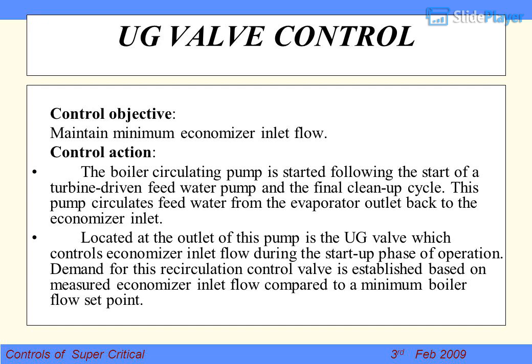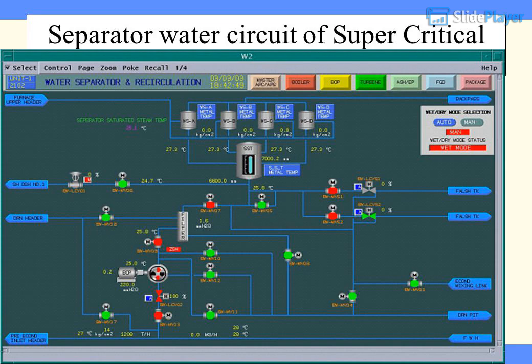UG Valve Control — Control Objective: maintain minimum economizer inlet flow. The boiler circulating pump (BCP) is started following the start of a turbine-driven feed water pump and the final clean-up cycle. This pump circulates feed water from the evaporator outlet back to the economizer inlet. The UG valve, located at the outlet of this pump, controls economizer inlet flow during the start-up phase. Demand for this recirculation control valve is established based on measured economizer inlet flow compared to a minimum boiler flow set point. BCP is required at load less than 30% of TMCR — that is, wet mode.